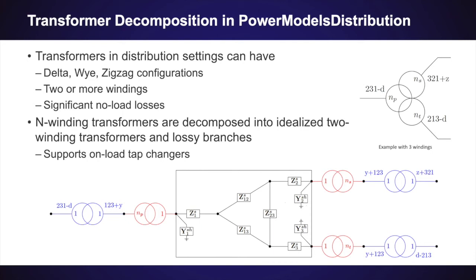One component that I'd like to highlight in particular is multiphase transformers, which can have many different settings in multiphase networks. They can have delta, Y, or zigzag configurations, two or more windings, and significant no-load losses, which makes them difficult to model straightforwardly. Therefore, we have included a decomposition model where we break down multiphase transformers into ideal two-winding lossless transformers and build a loss model from impedance branches to account for the no-load losses. We show an example of a three-winding transformer with delta and zigzag configurations decomposed into these ideal transformers and loss model.